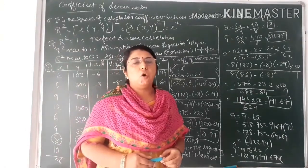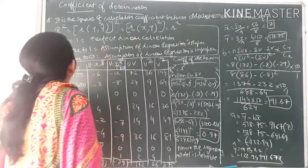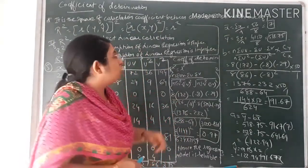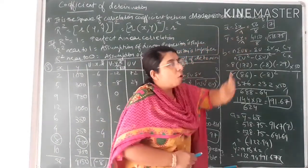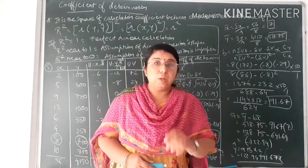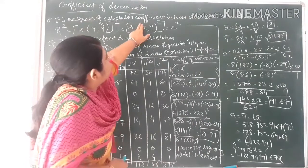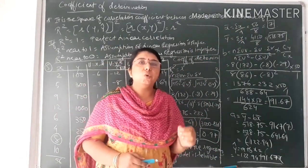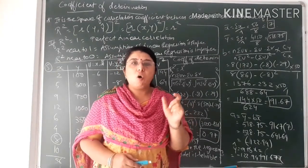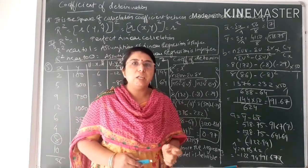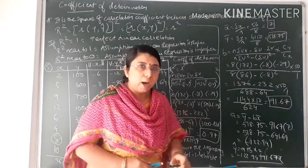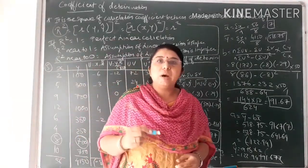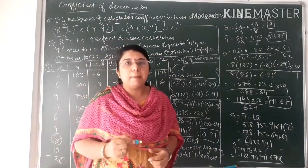What is coefficient of determination? First let us understand this terminology. As you can see on the board, it is the square of the correlation coefficient. Correlation coefficient means the second chapter value, that is R. It is the correlation coefficient between observed and estimated value of Y. Y is a dependent variable and X is an independent variable. The square of the correlation coefficient between observed and estimated value of Y is called the coefficient of determination. It is denoted by capital R square.